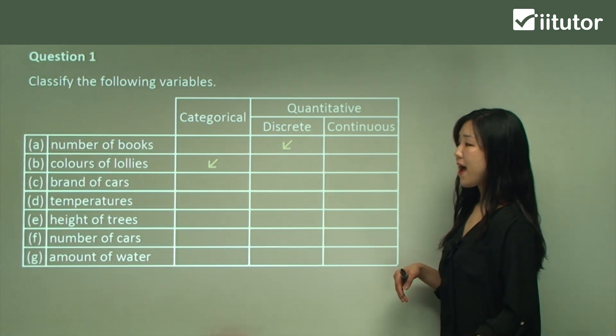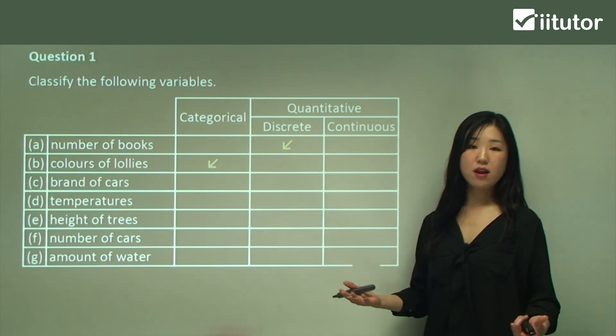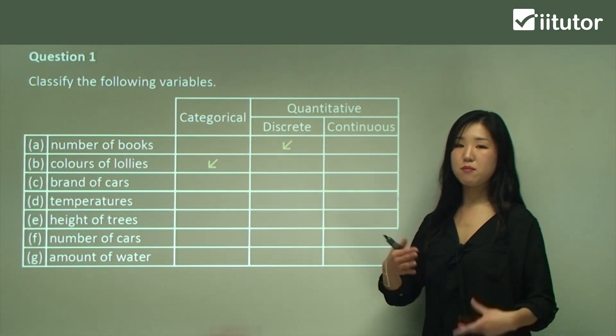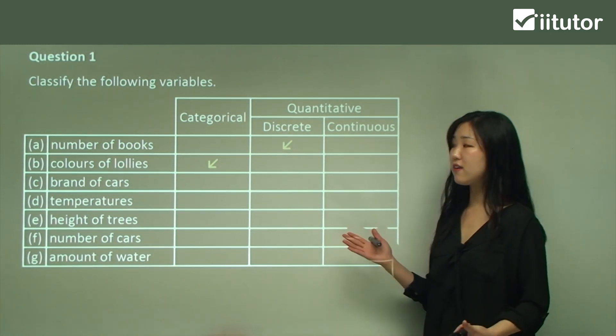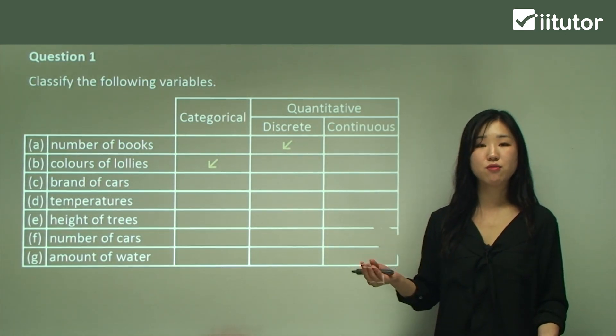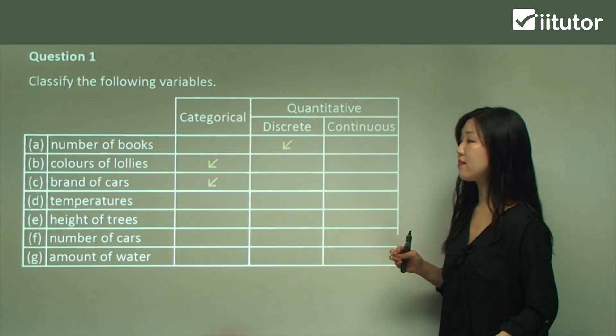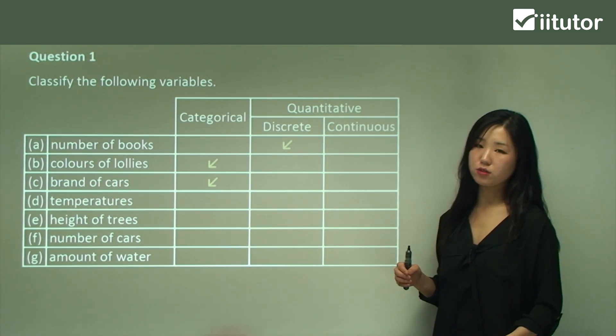Now C — brand of a car. Brand of a car, like Mitsubishi or Honda, we can categorize it into a brand. So it's categorical.